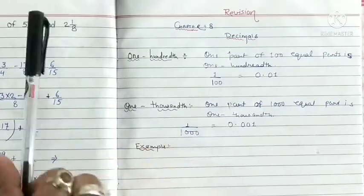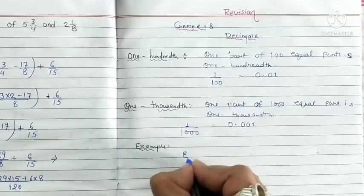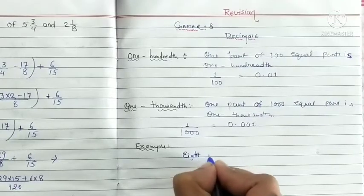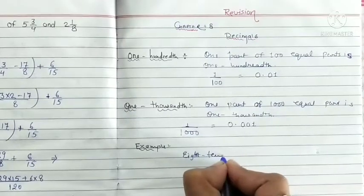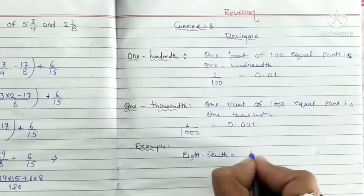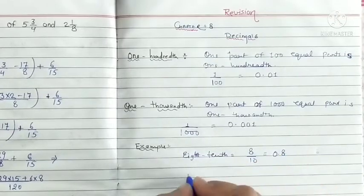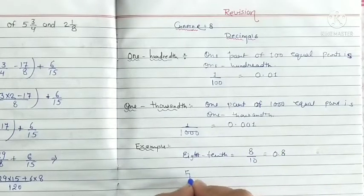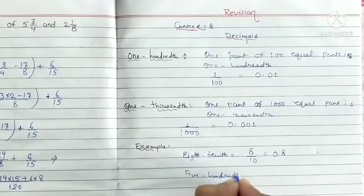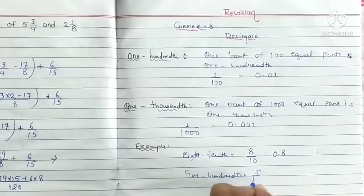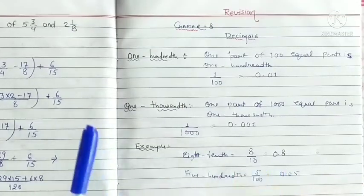Eight tenth is equal to eight upon ten, 0.8. Five hundredth, five upon hundred is equal to 0.05.